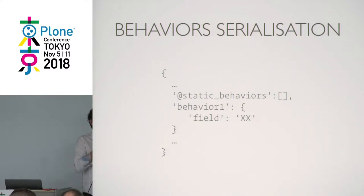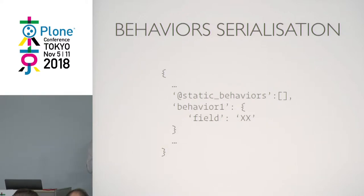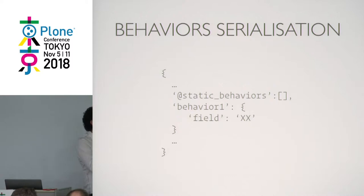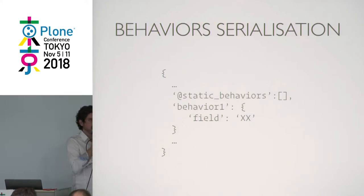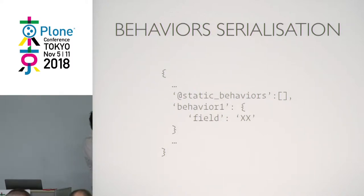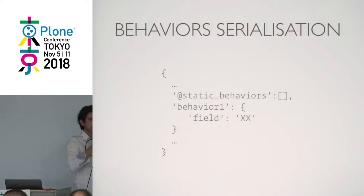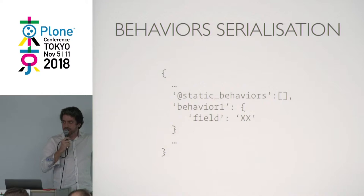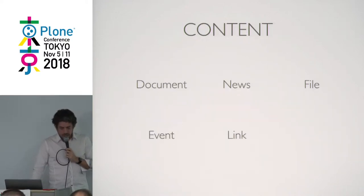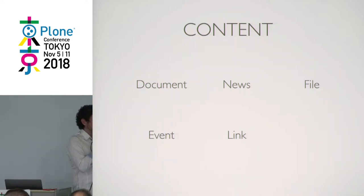Behaviors: we have some differences from the Plone REST API. This is the biggest and most difficult one — we are not flattening the fields from behaviors onto the main object. When you get a page, all fields from dublincore are nested inside a key for the dublincore behavior, because we're splitting behaviors on serialization. To make this easier for the front-end, we provide a key called 'static behaviors' listing all behavior keys on your content. Rob did an amazing job implementing this in Volto.